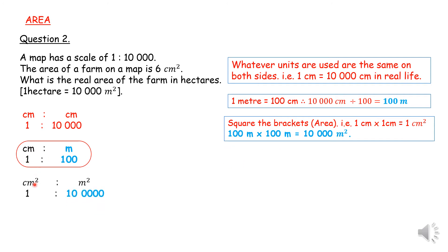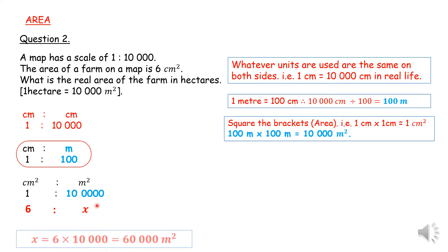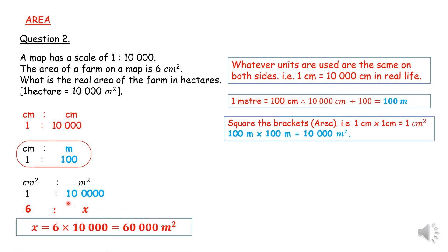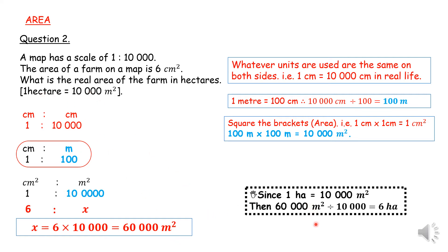So I say 1 times 1 squared is 1, and 100 times 100 is 10,000. Now my scale is: 1 square centimeter is equivalent to 10,000 square meters in real life. I put my 6 square centimeters under the centimeter square column and find my unknown by cross multiplication. I get 60,000 square meters. Since 1 hectare equals 10,000 square meters, then 60,000 divided by 10,000 gives an answer of 6 hectares. That is the correct answer.